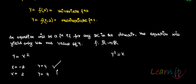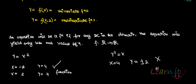Now for y² = x: if I pick x = 4, which is in the domain, then y could take the value +2 or -2. This is not a function, because it does not give a single value of y for a given value of x. So y² = x is not a function. In the next recording, we'll be talking about one-to-one functions and onto functions.